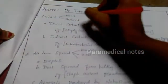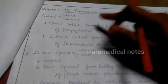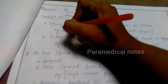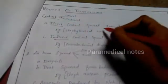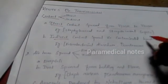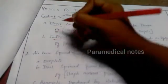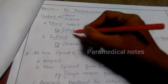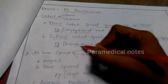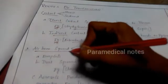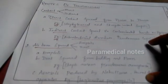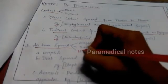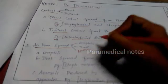The fourth point is route of transmission — how hospital infection is transmitted. First is contact, which is direct and indirect. Direct contact is spread from person to person; an example organism is Staphylococcus. Indirect contact spreads via contaminated hands and equipment; an example is Enterobacter species. Writing organism name examples gives a very perfect answer in the exam.